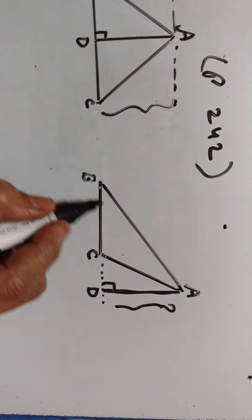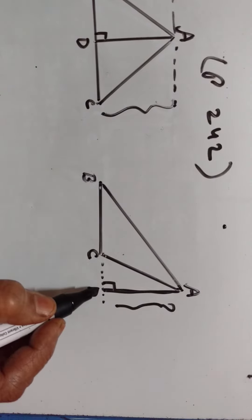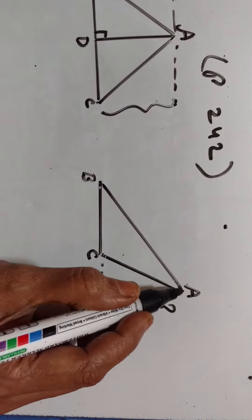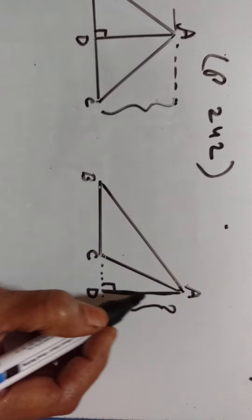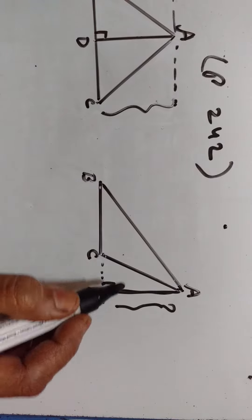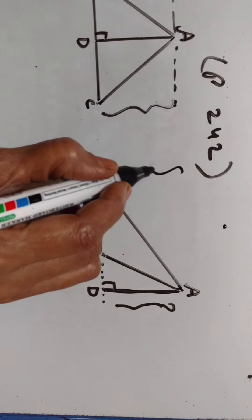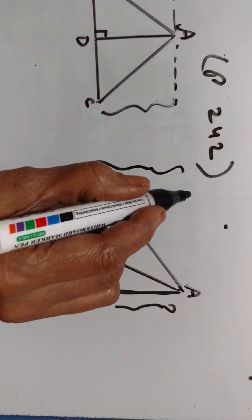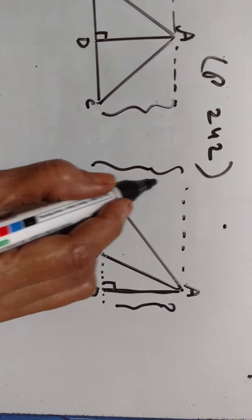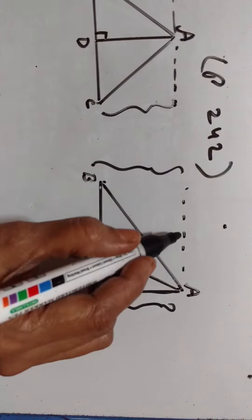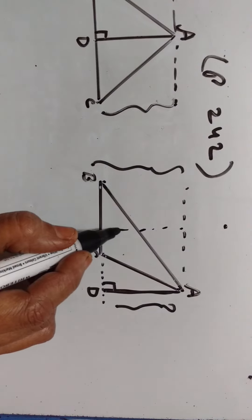The triangle is not ABD — the triangle is ABC. The height is this perpendicular distance AD.